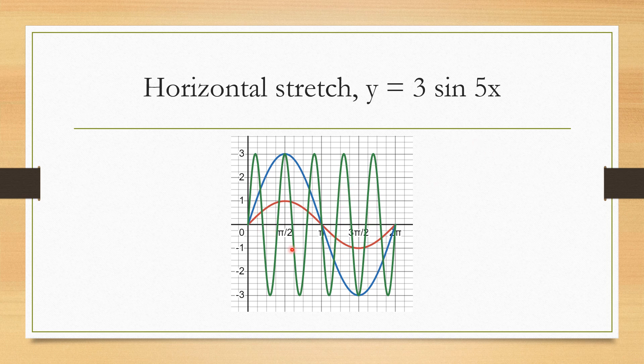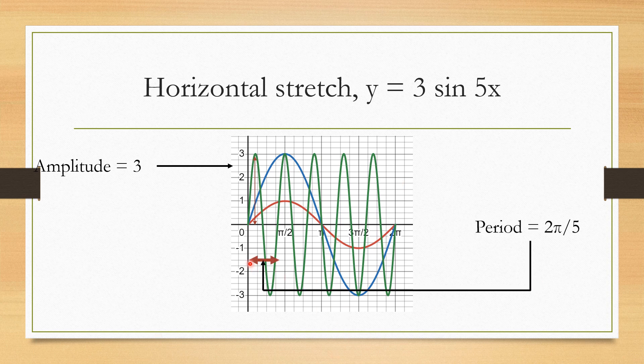But the green graph is actually the graph of y equals 3 sine 5x. So you can see there's a few more cycles occurring before 2 pi ends. So how does this change our numbers amplitude and period? So you can see the amplitude remains the same. It still goes from 0 up to 3. So that's the peak.